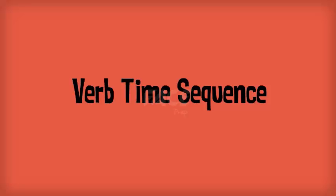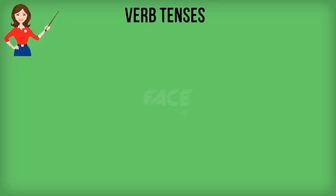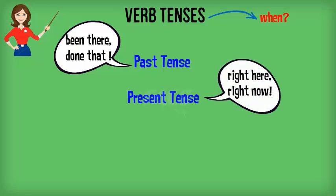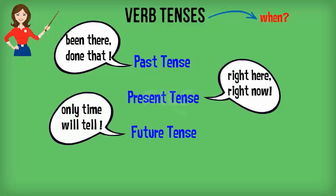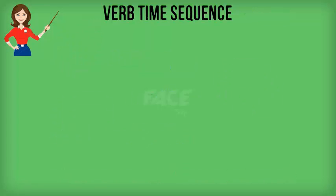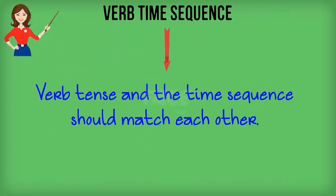Verb Time Sequence Error. The purpose of verb tenses is to help us specify the time of an occurrence. In a broad sense, the past tense is used to talk of events that are over. The present talks of something that is happening at the time of the conversation, and the future talks of something that is likely to happen after the conversation. The sense of the sentence and the context should tell you which tense you should use. In English, it is essential to make sure that the verb tense and the time sequence it denotes are in the proper form.